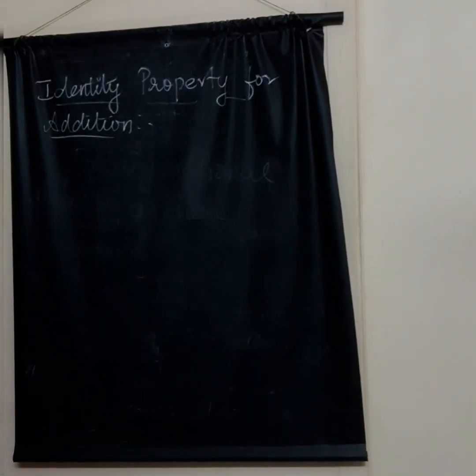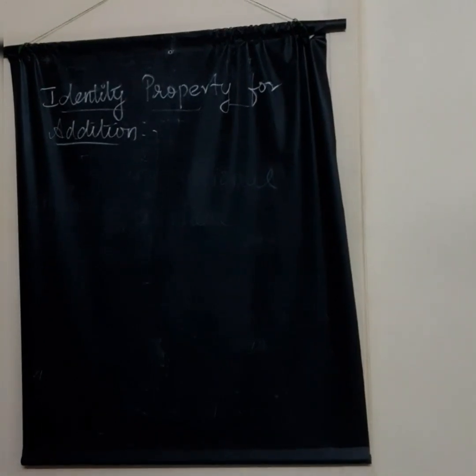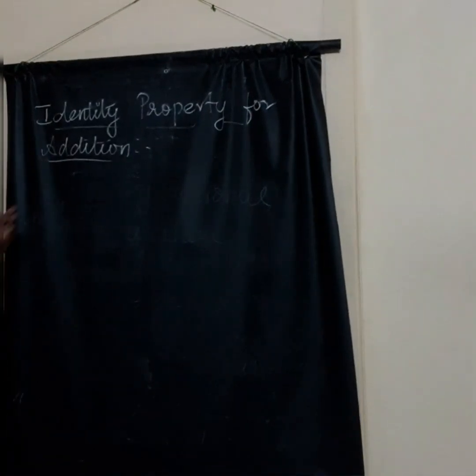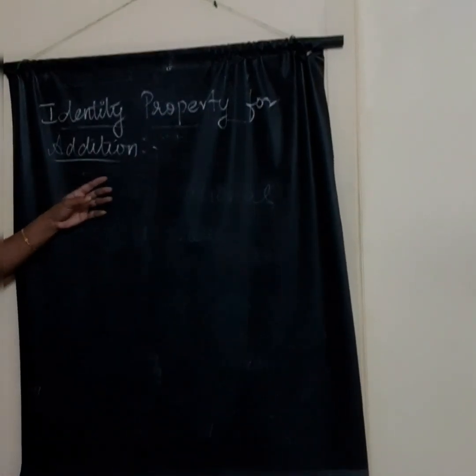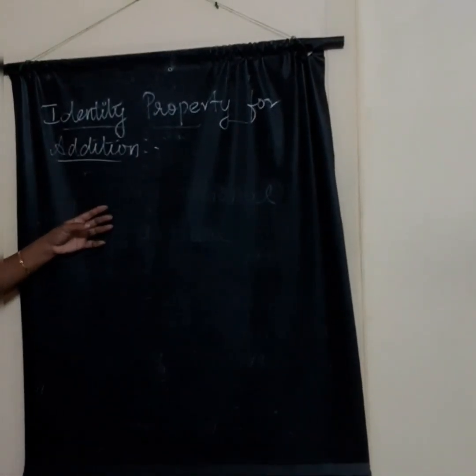Welcome all students. Last week we learned some basic properties of rational numbers. Today we are going to see some more properties of rational numbers. The first one is the identity property for addition.